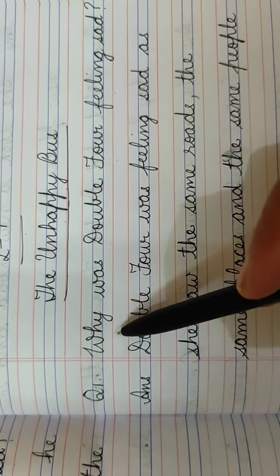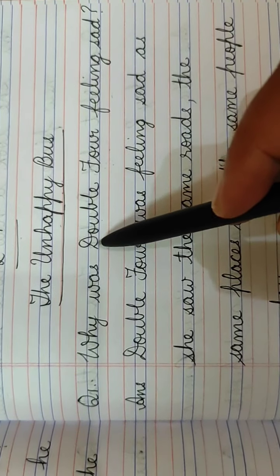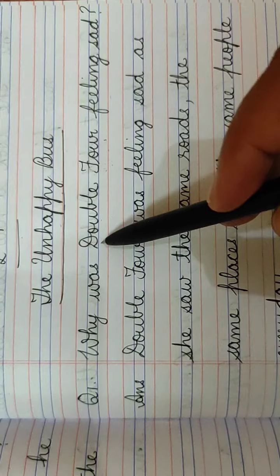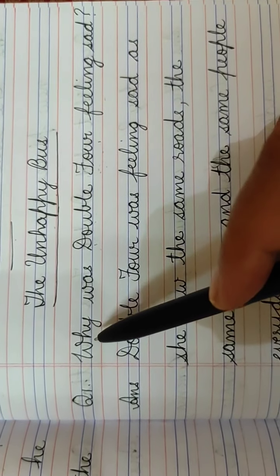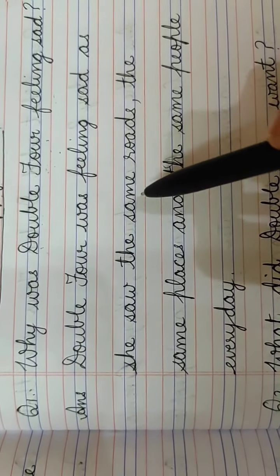Question number 1 is, why was Double 4 feeling sad? Children, here Double 4 is the name of the bus, so D will be capital for Double and F will be capital for 4. Don't write small case letters here. The answer is, Double 4 was feeling sad as she saw the same roads, the same places, and the same people every day. Full stop.